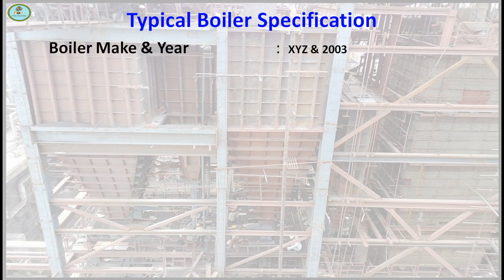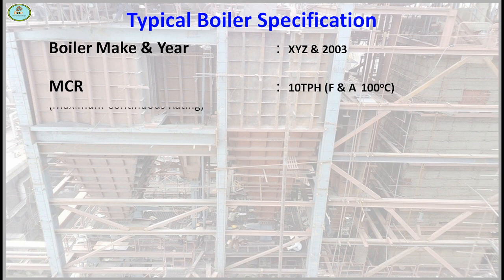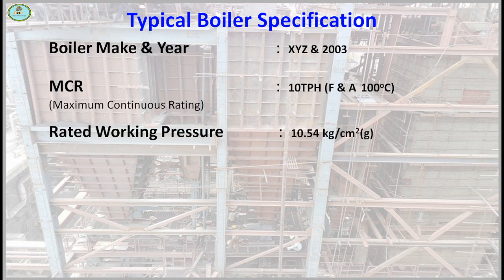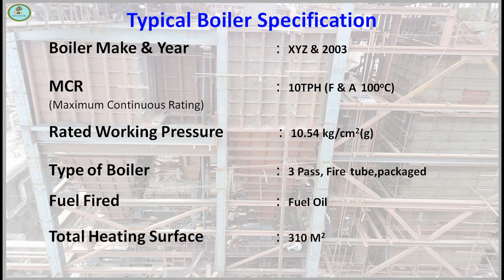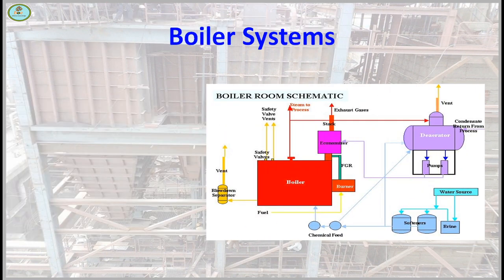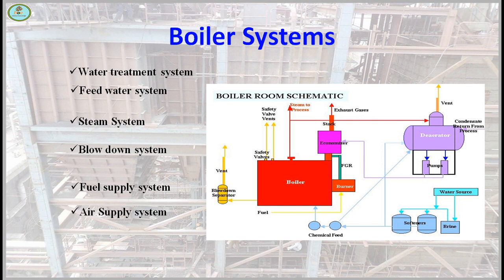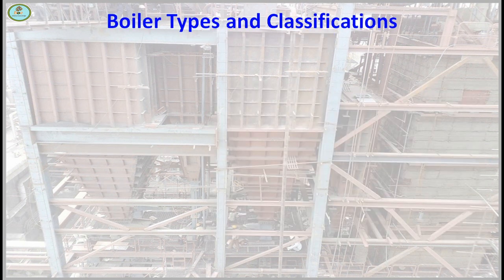Boiler specification is basically given on the boiler drum: boiler make and year — for example, Thermax boiler made in 2003 — maximum continuous rating given in kg/hr, also temperature, rated working pressure, type of boiler, fuel fired, and total heating surface area. A boiler system typically includes: water treatment system, feed water system, steam system, blow down system, fuel supply system, air supply system, and flue gas system.